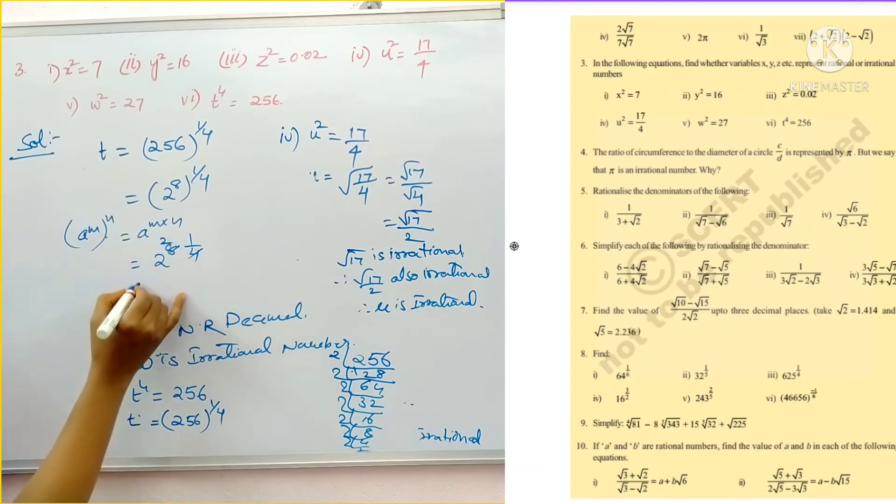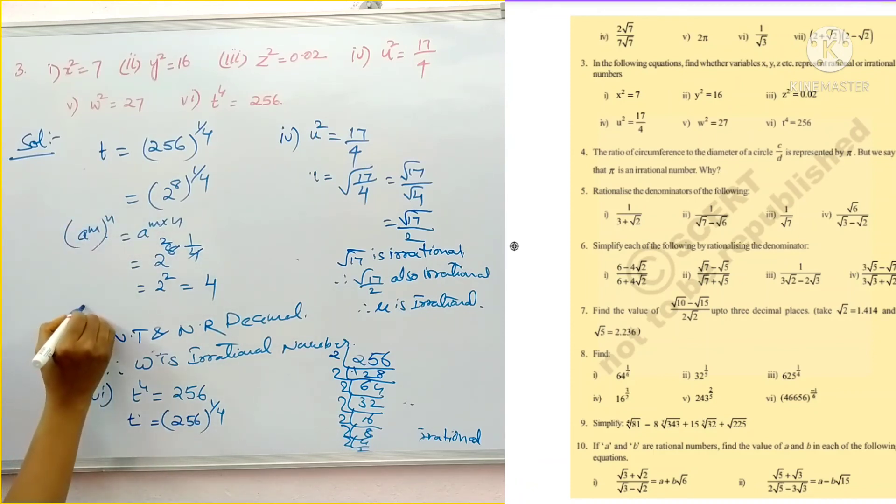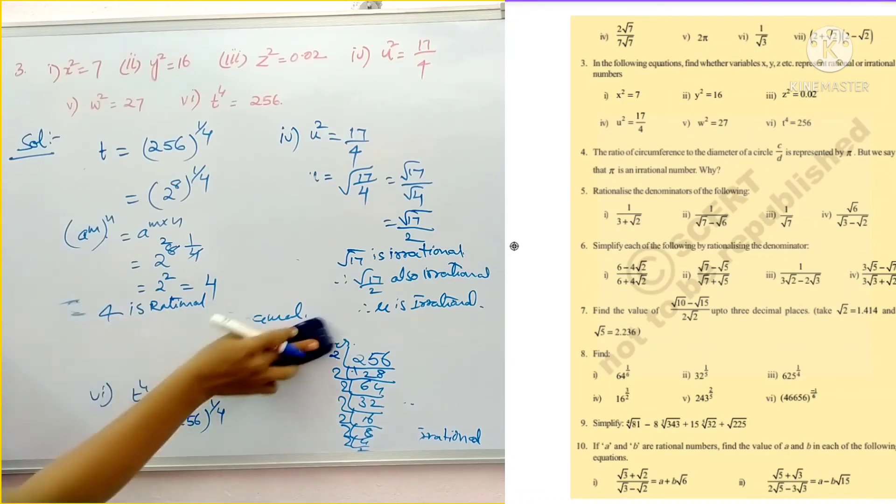So, 4 is rational number. 4 is rational. So, this is a rational number. Here it is t. 4 is rational number. So, therefore, t is a rational number.